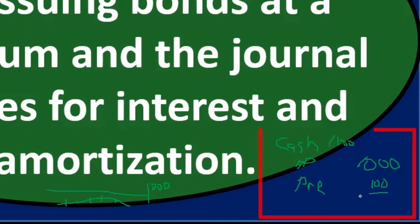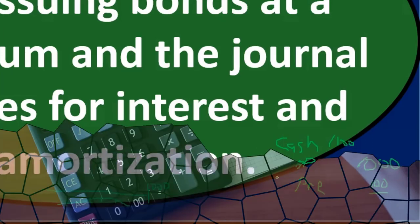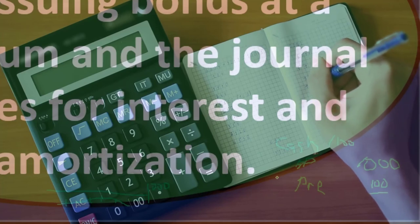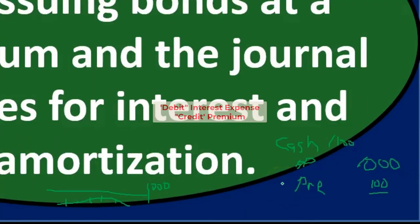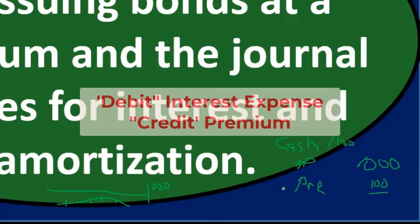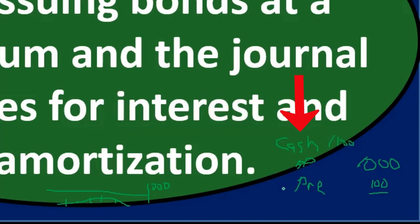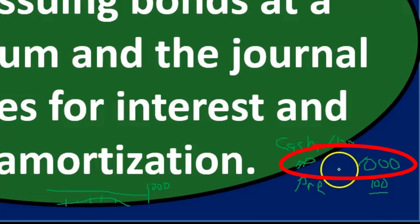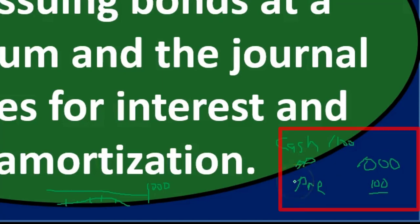To summarize: the first journal entry puts the bond on the books — debit cash, credit bond payable and premium on bond payable. Then each period, a combined journal entry debits interest expense, debits the premium for the amortization amount, and credits cash for the payment made. By the end of the bond's life, the premium will be fully amortized, leaving only the bond payable, which is retired by debiting bond payable and crediting cash.